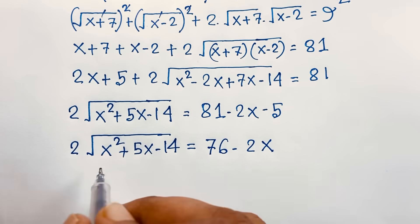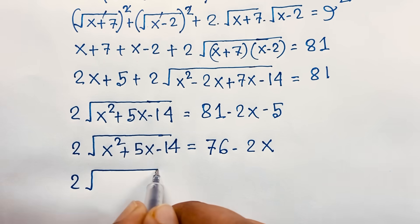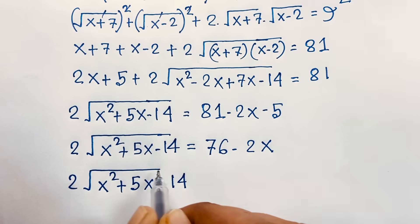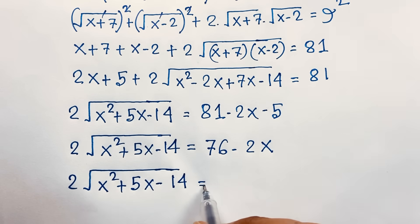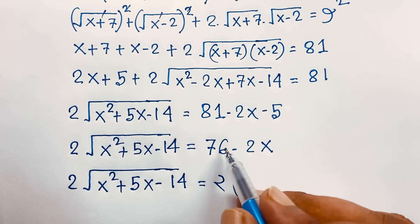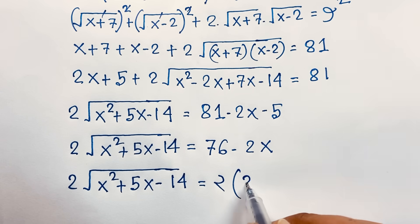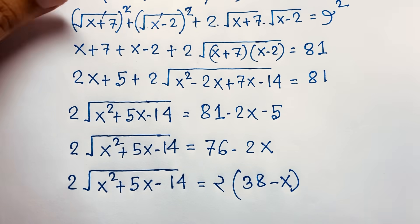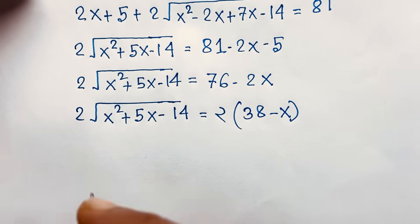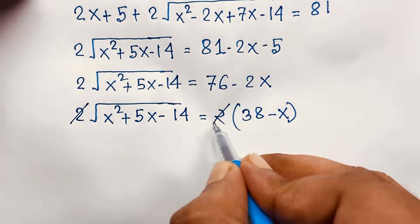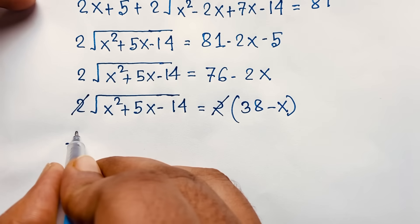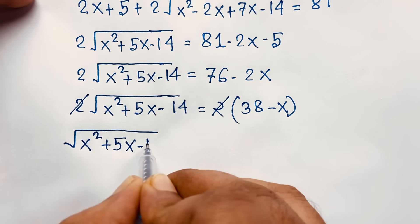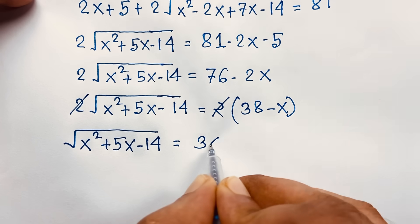Then: 2 times square root of (x squared plus 5x minus 14) equals 76 minus 2x. Since 2 is common on the right side, I divide both sides by 2. So 76 divided by 2 is 38, and 2x divided by 2 is x. After dividing both sides by 2, we get: square root of (x squared plus 5x minus 14) equals 38 minus x.